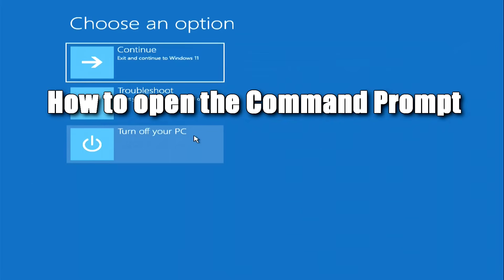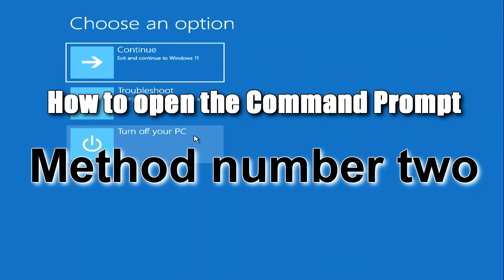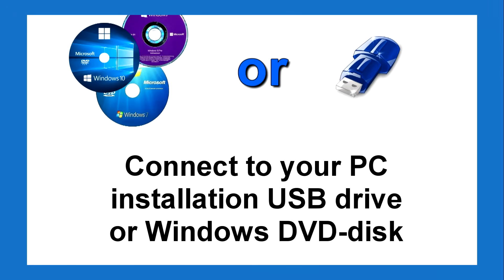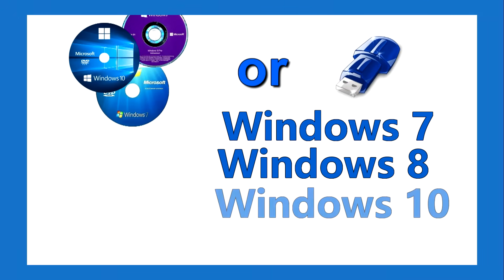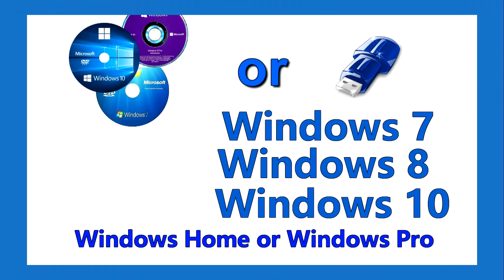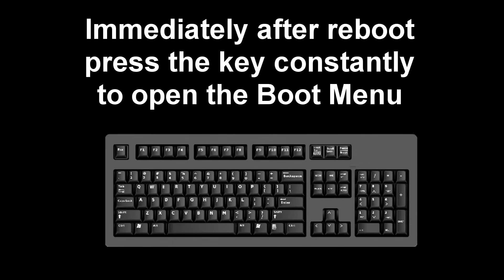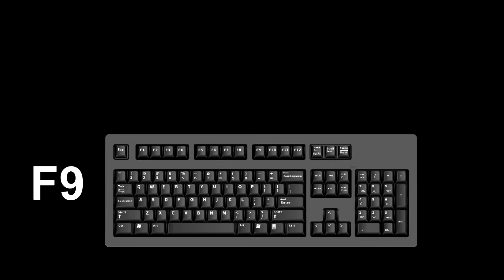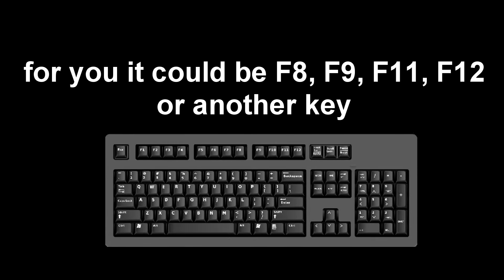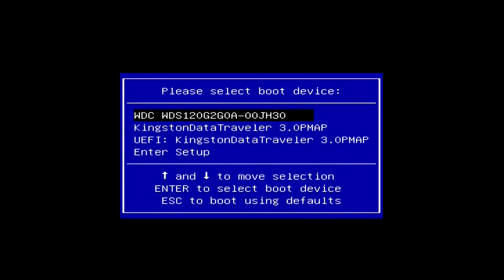Method number two: if your system asks for a password to open the command prompt, you need to connect a Windows 7, 8, 10, or 11 installation USB drive or DVD disk to your computer. Any version of Windows will work — Home or Pro. Connect this USB drive or DVD disk to your computer and restart. Immediately after the reboot starts, continuously press the key to bring up the boot menu. I press F9; for you it could be F8, F9, F11, F12, or some other key. You can find out how to call the boot menu in a video on my channel — the link is in the description.